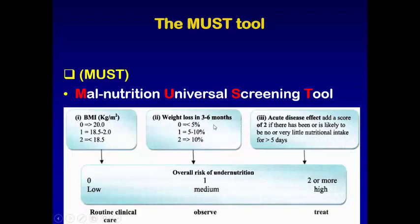The second part of MUST is the weight loss in the last three to six months. If it is less than five percent, we give zero. If it is between five to ten percent, we give one. If it is more than ten percent, we give two.